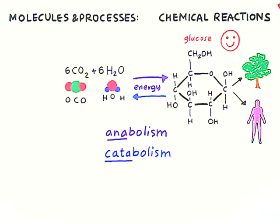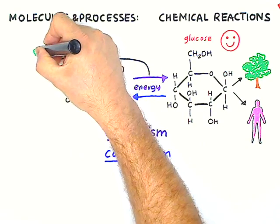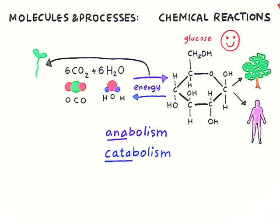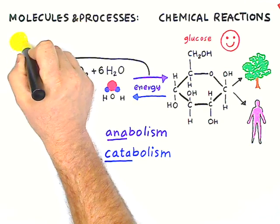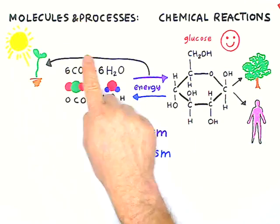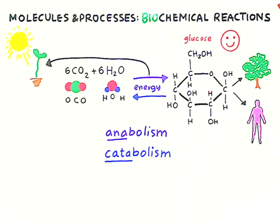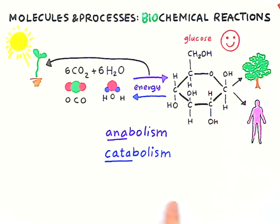Now, if these reactions take place not inside a test tube, but inside a living being — like this little green plant — in fact, we're talking about photosynthesis, making sugar out of sunlight and carbon dioxide. Here, your chemical reactions become biochemical. Photosynthesis is anabolic, and plants are mostly anabolic. They grow.